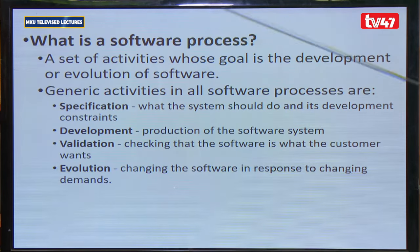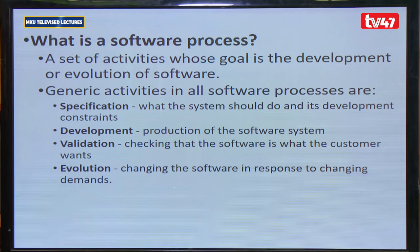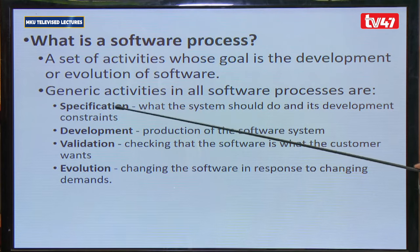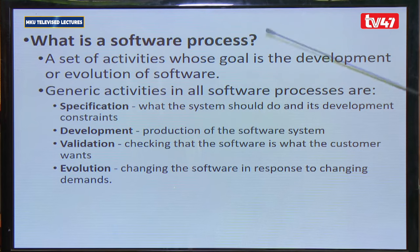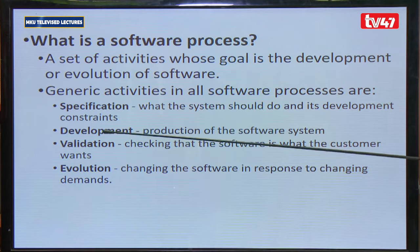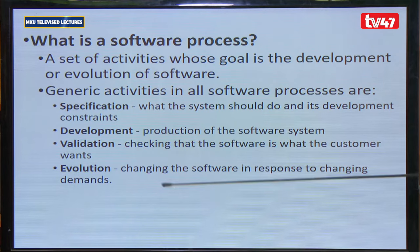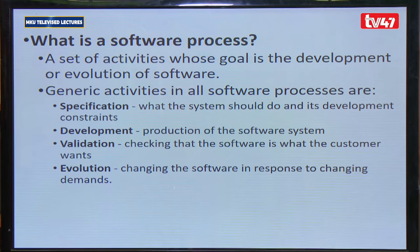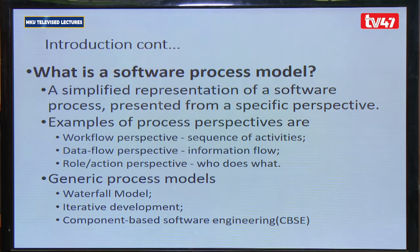A software process is a set of activities whose goal is the development or evolution of software. It includes: specification, which describes what the system should do; development, the actual production of the software; validation, checking that the software is what the customer wants; and evolution, changing the software due to changing customer needs. Software is dynamic, so evolution is a very important aspect.